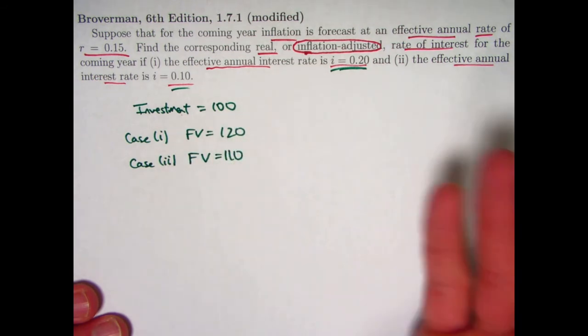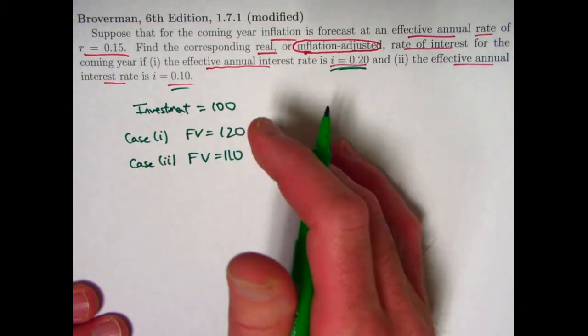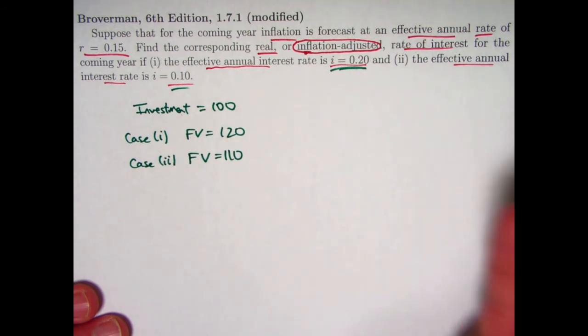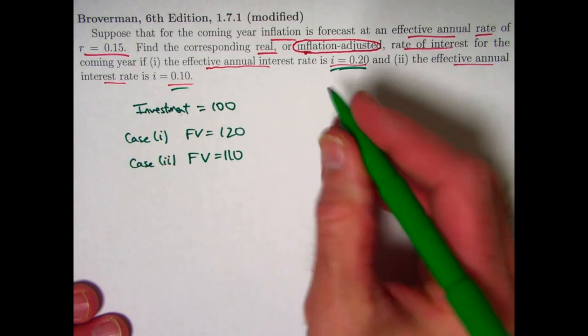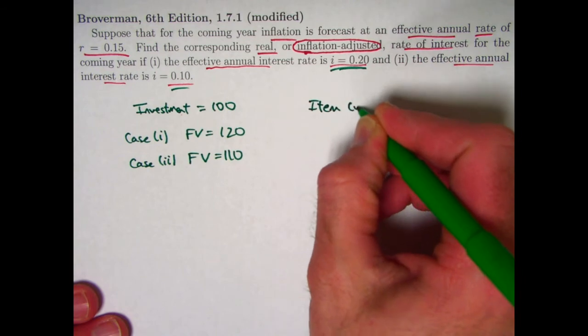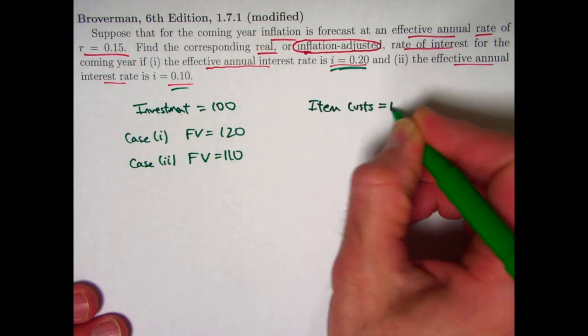So your money, in a nominal sense, has grown by 20 percent in case one and 10 percent in case two, but because of inflation, prices generally speaking going up by 15%, your buying power has not necessarily gone up.